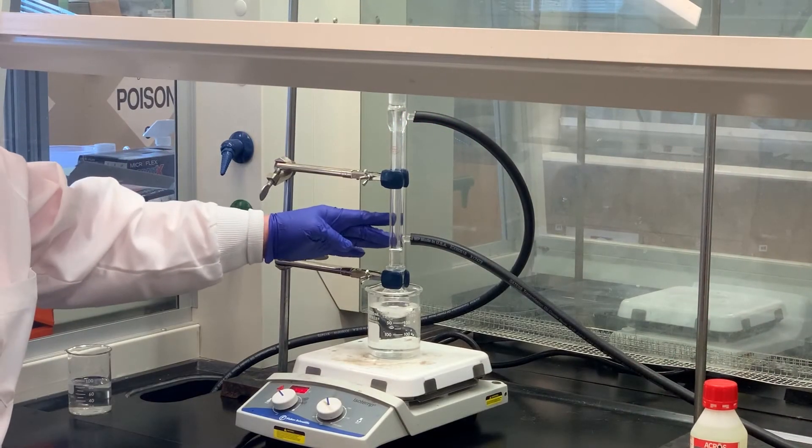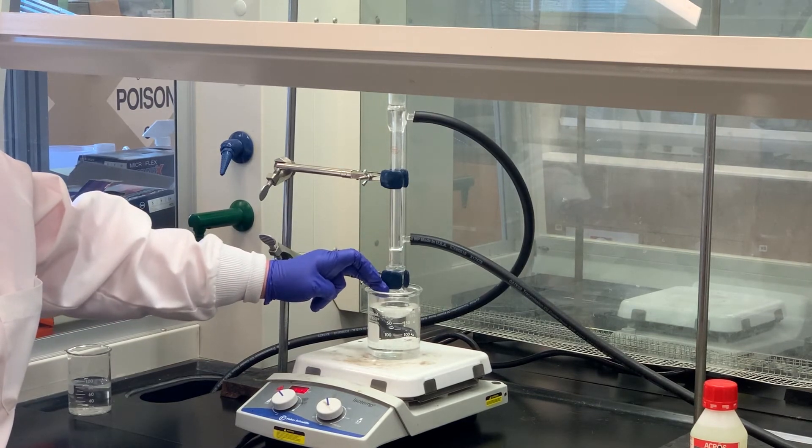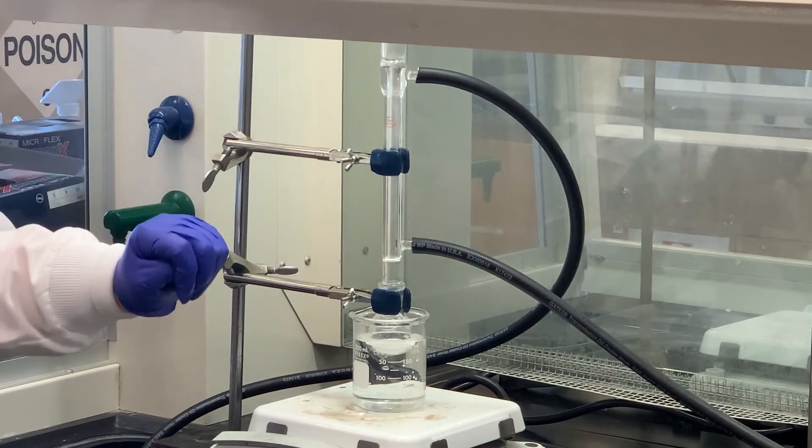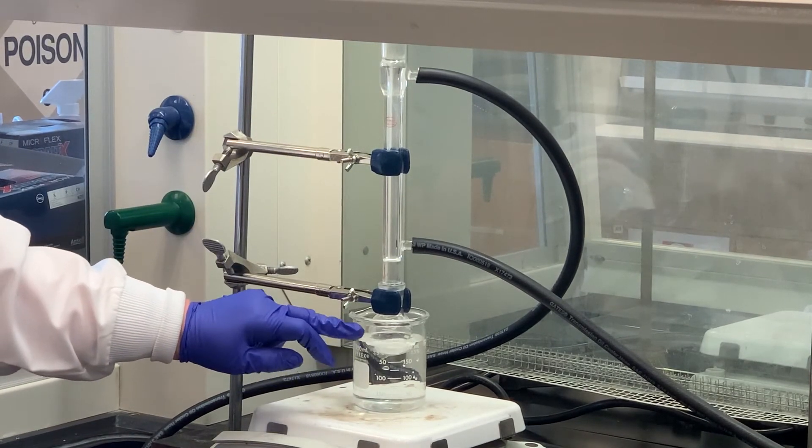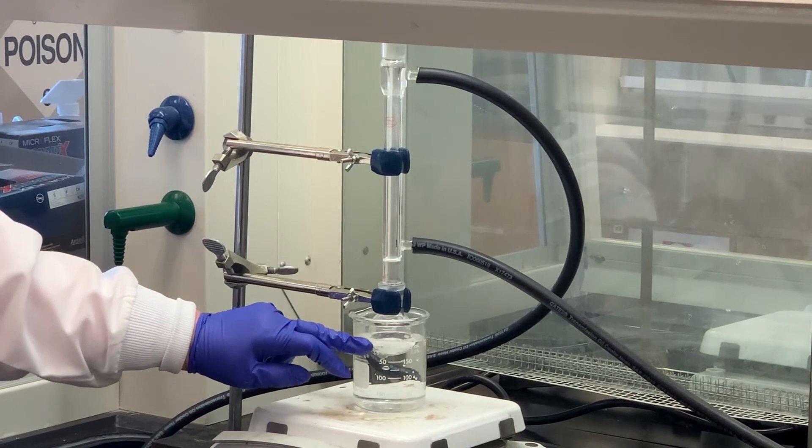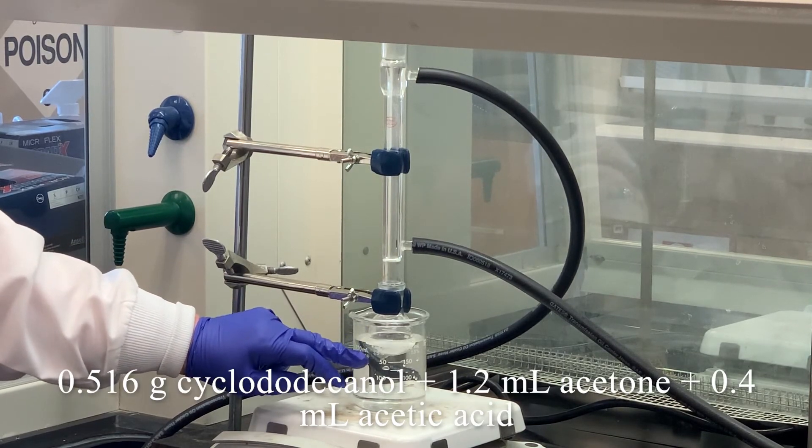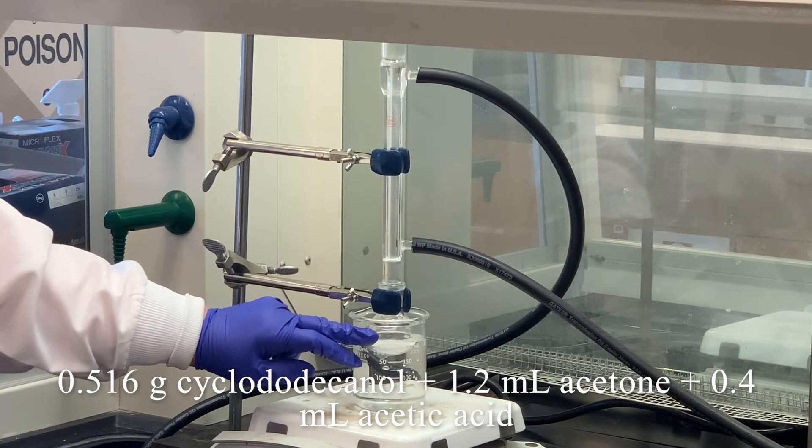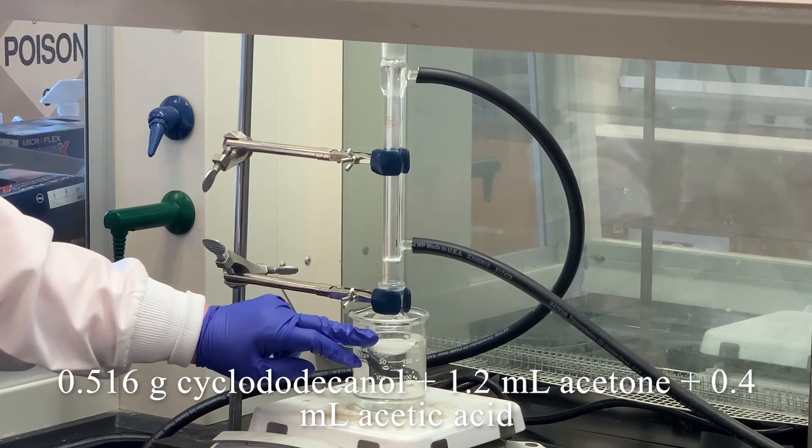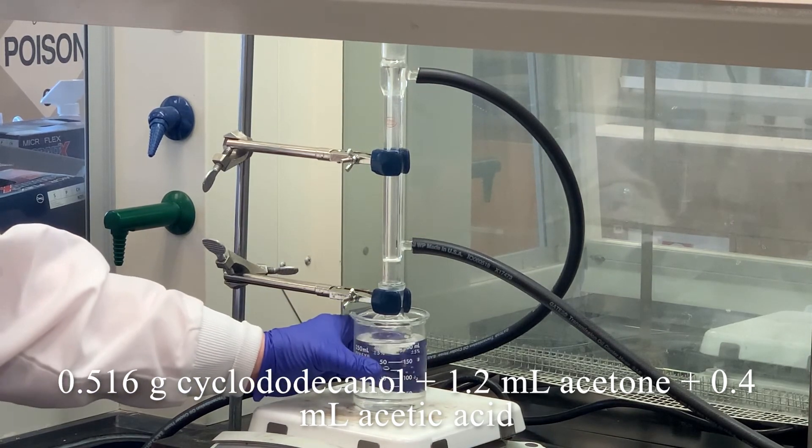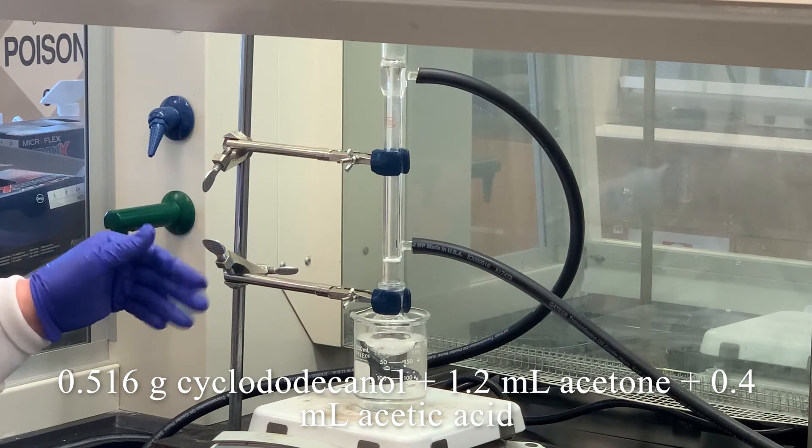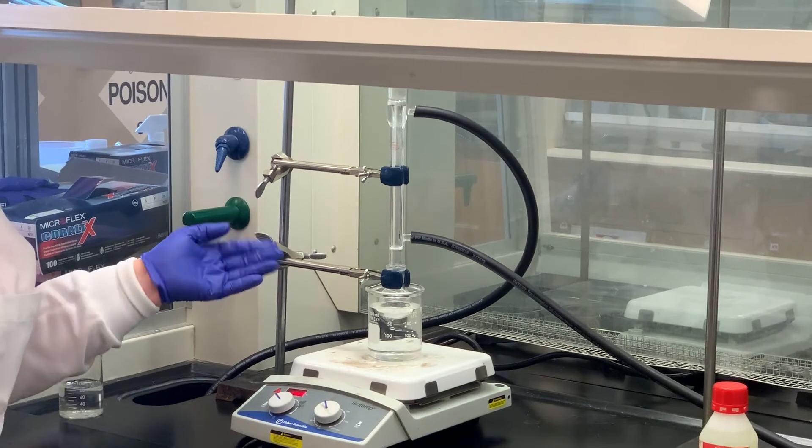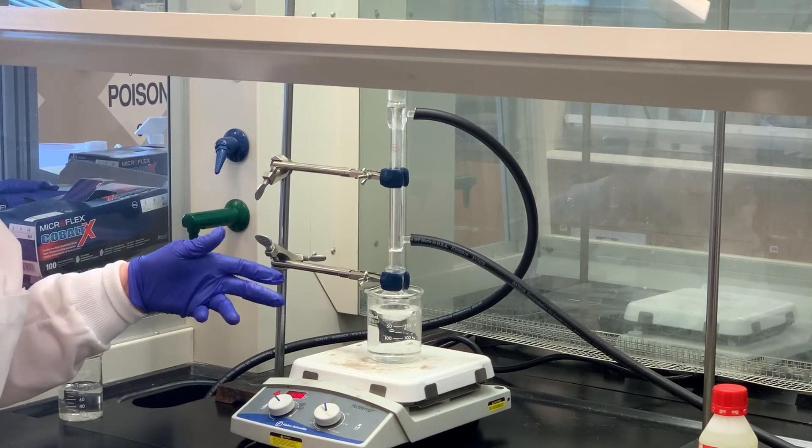I have the apparatus set up. We've got the 25-milliliter round bottom flask hooked up through the condenser, water going through the condenser in the bottom, out the top, and a stir bar stirring the components inside the flask. What I have in there is 0.516 grams of our alcohol, the cyclododecanol, 1.2 mils of acetone and 0.4 mils of acetic acid. We need to heat the contents to about 45 degrees Celsius. Once we're at 45 degrees, we'll start adding the bleach—we'll add about 4.5 mils over a 30-minute period.